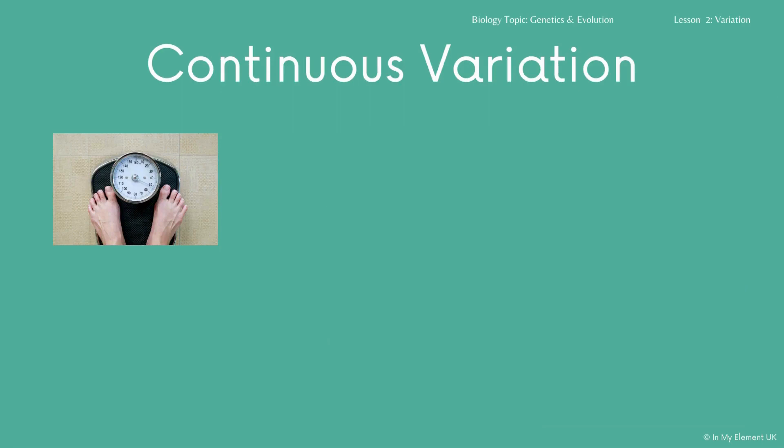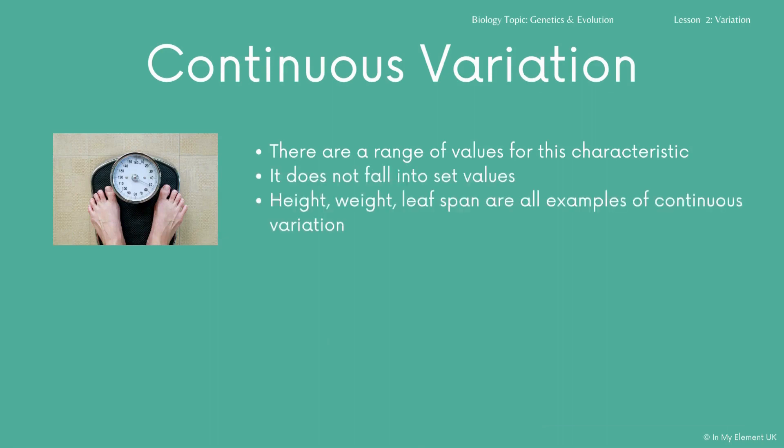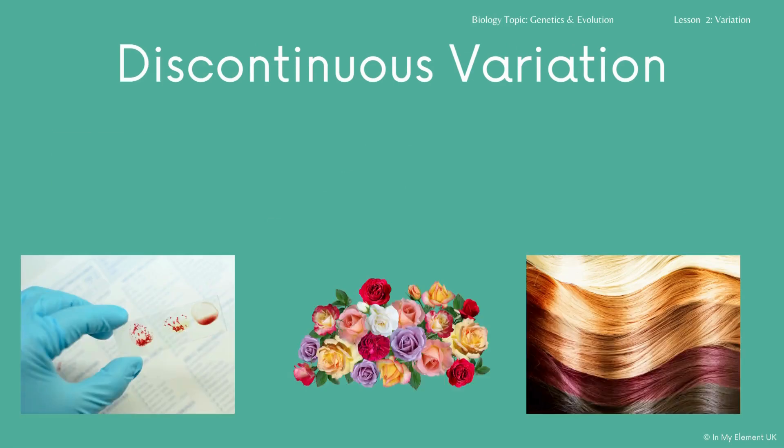Continuous variation covers a range — there's a range of values for a characteristic and it doesn't fall into set values. Examples include height, weight, leaf span, intelligence, and skin colour.